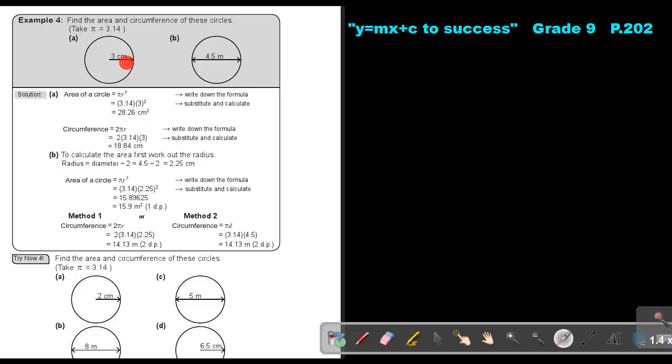If I work out this circumference, it's 2 times π times r. So do substitution in brackets. Take your calculator and multiply, and I get 18.84.